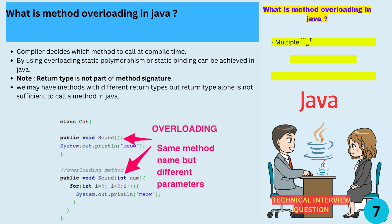The compiler decides which method to call at compile time based on the number and type of arguments. This is known as static binding or static polymorphism. Keep in mind that the return type of the methods is not considered part of the method signature. Two methods can have different return types, and the compiler still knows which method to call based on the arguments. However, the return type alone is not enough for the compiler to know which method to call.